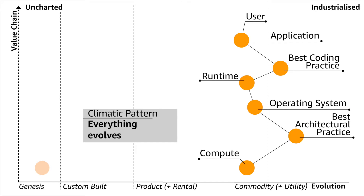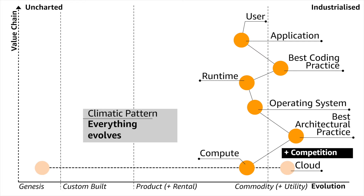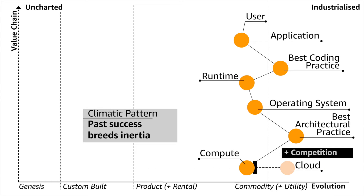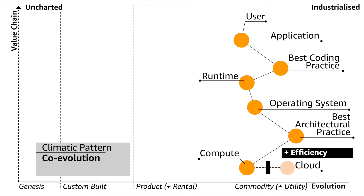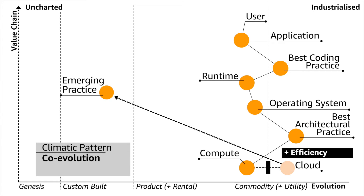The general pattern you learn is that everything evolves. If there is supply and demand competition, stuff will shift from the left to the right. One of the effects that has is inertia — we have inertia to change because of pre-existing practices and pre-existing capital. If compute shifts from a product to a utility and you have data centers full of servers, you're going to have some resistance to that change. Another impact that happens is coevolution: as compute shifts from a product to a utility, its characteristics change and that causes a coevolution of practice.